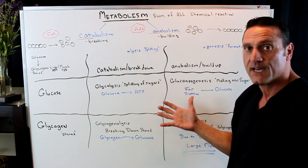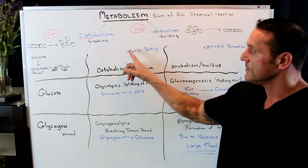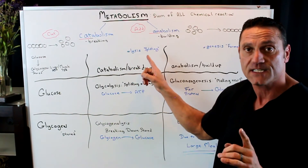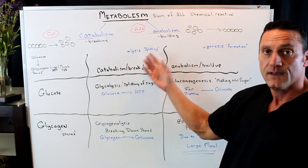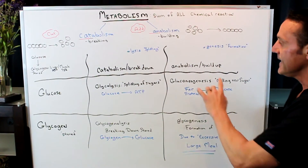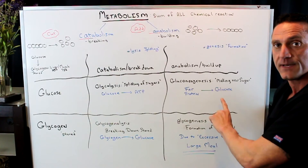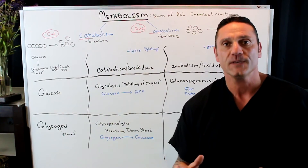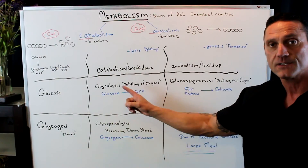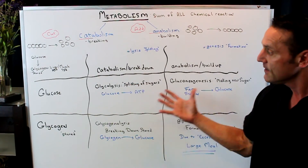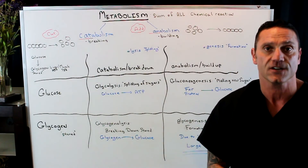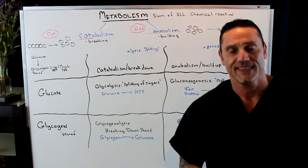Remember the different terminology. When you have '-lysis,' it's a breaking down, it's a splitting, it's catabolizing. '-Genesis' is the building up — it's anabolism, to build up. I hope this helps. This little graph puts it in simplistic terms. The terminology is very important to understand. I hope this helped. Thanks for watching.